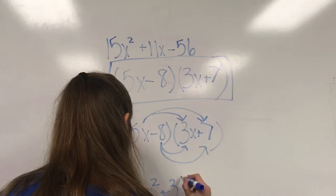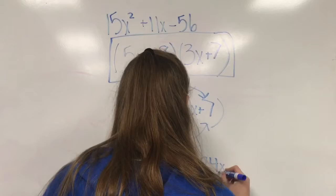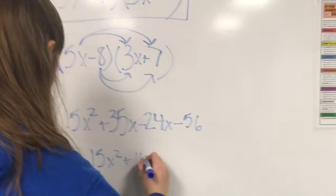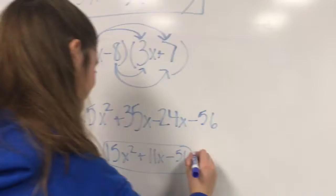We will get 5x squared plus 35x minus 24x minus 56. Our final answer in our check will be 5x squared plus 11x minus 56. That was our original problem, which means it's correct.